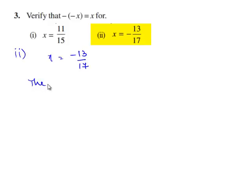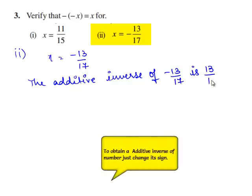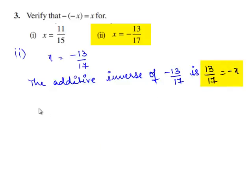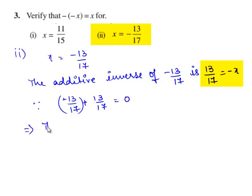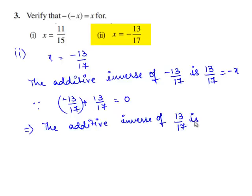The additive inverse of minus 13 by 17 is 13 by 17, which is equal to minus x. Since minus 13 by 17 plus 13 by 17 is equal to 0, the same equality implies that the additive inverse of 13 by 17 is minus 13 by 17, which is equal to x.